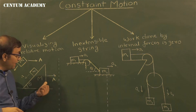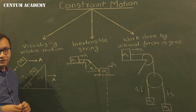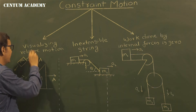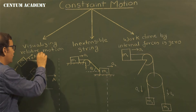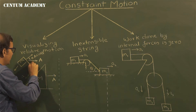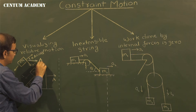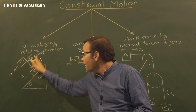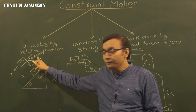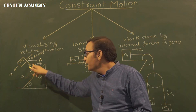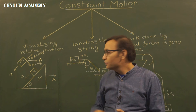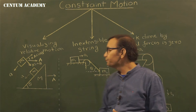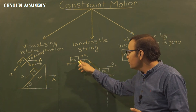The wedge has acceleration capital A in the right-hand direction. Taking the component of capital A along and perpendicular to the incline (with angle theta), the component along the incline is A·cosθ and perpendicular to the incline is A·sinθ. So along the incline, the net acceleration of small m is its relative acceleration minus A·cosθ, and perpendicular to the incline the acceleration is A·sinθ. This is how you use visualization of relative motion.